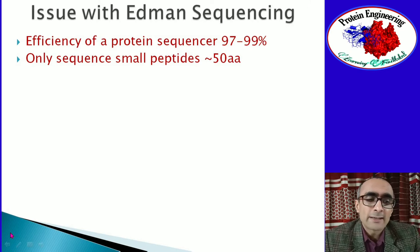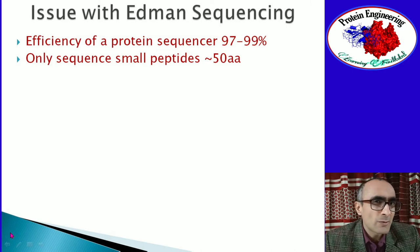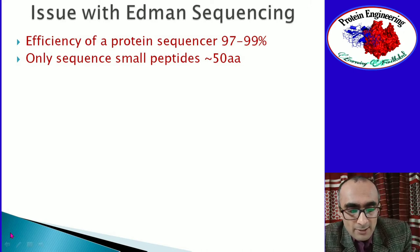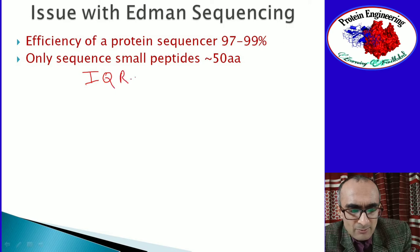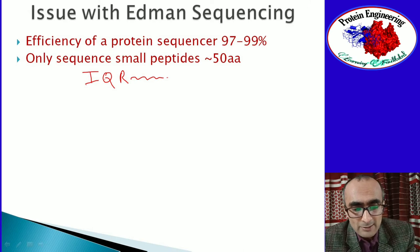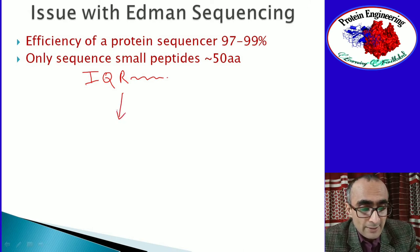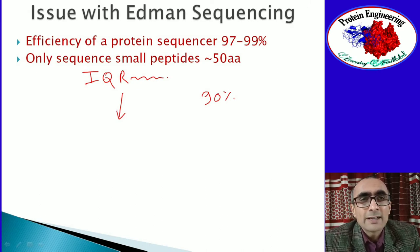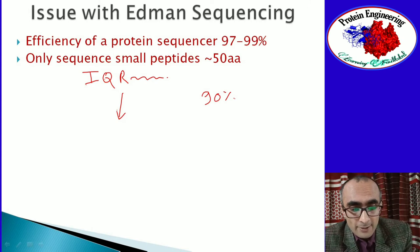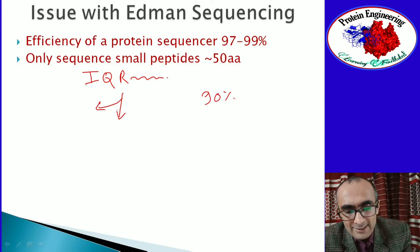In today's time we have up to 99% efficient sequencers, but even using those sequencers we can sequence only up to 50 amino acids. To understand why, consider an example: if you have a peptide starting with isoleucine, then glutamine, arginine, and other amino acids, and you send it for sequencing using Edman degradation with 90% efficiency, then in each cycle only 90% of the reactant reacts with PITC. In cycle number one you'll get a peak for isoleucine — the N-terminal amino acid — and the amount of this peak would be 90% of the total concentration.